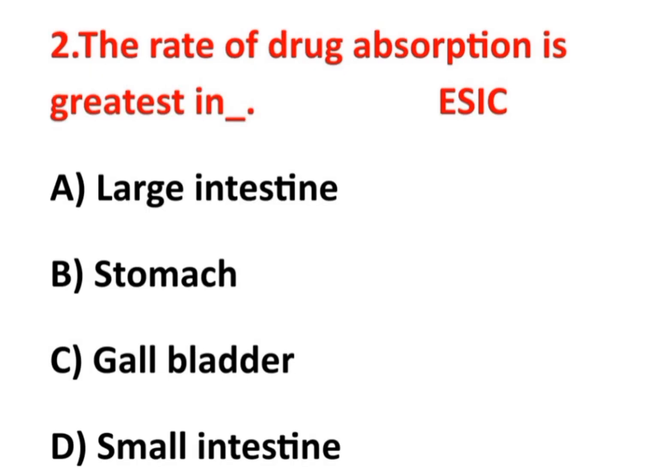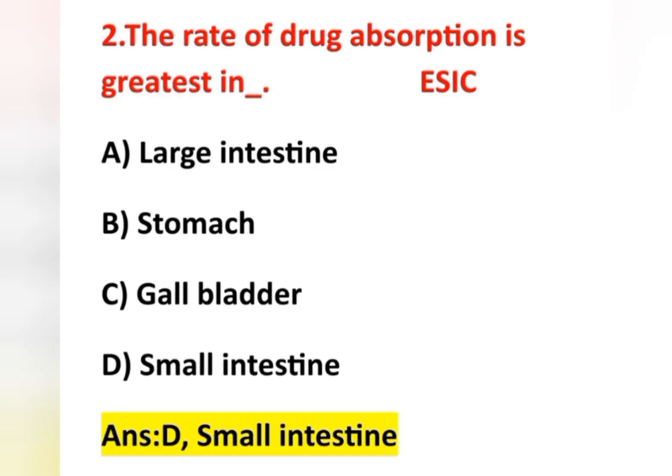Second question: the rate of drug absorption is greatest in — option A large intestine, option B stomach, option C gallbladder, option D small intestine. Answer is option D, small intestine. Maximum absorption of drugs and nutrients takes place in the small intestine because the presence of villi and microvilli in the mucous membrane greatly increases the surface area.